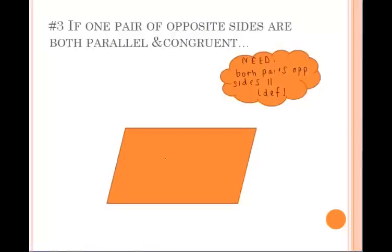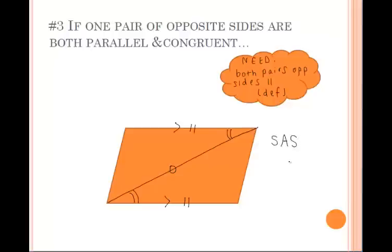Why does number three work? We have one pair of opposite sides that are both parallel and congruent, and we need both pairs to be parallel by definition. Drawing in the diagonal creates two triangles. Using those parallel sides, we get alternate interior angles congruent; using the reflexive property on the shared side, those triangles are congruent by SAS. Using CPCTC on those angles, we find the alternate interior angles are congruent, meaning those other sides are parallel as well — so both pairs of opposite sides are parallel.